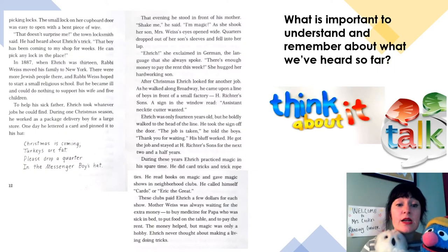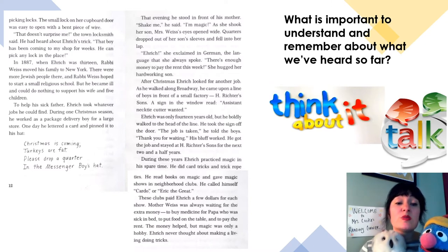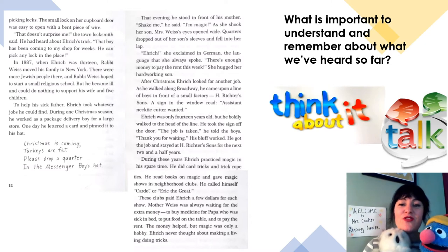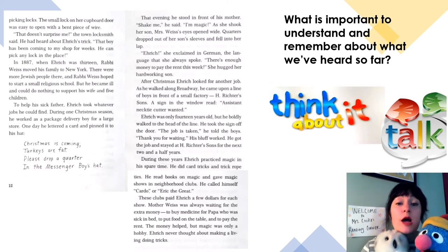In 1887, when Enric was 13, Rabbi Weiss moved his family to New York. There were more Jewish people there, and Rabbi Weiss hoped to start a small religious school, but he became ill and could do nothing to support his wife and five children. To help his sick father, Enric took whatever jobs he could find. During one Christmas season, he worked as a package delivery boy. He lettered a card and pinned it to his hat: 'Christmas is coming, turkeys are fat, please drop a quarter in the messenger boy's hat.' That evening he stood before his mother and said, 'Shake me, I'm magic.' As she shook her son, quarters dropped out of his sleeves and fell into her lap. 'Enric,' she exclaimed in German, 'there's enough money to pay rent this week!' She hugged her hardworking son.